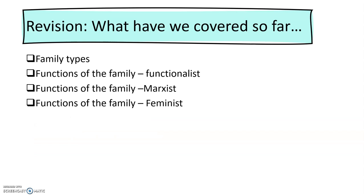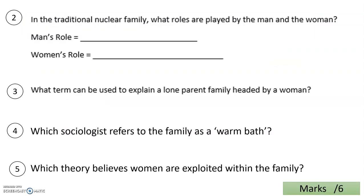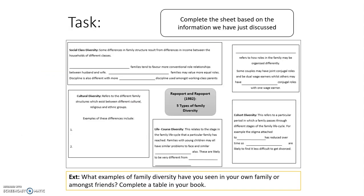So, where are we up to so far? We've looked at family types, the functions of the family according to functionalism, Marxism and feminism, and we've now done family diversity. There are some practice questions here — feel free to have a go. There is also a sheet attached in the shared area for revision if you'd like. I hope you've taken a lot from this — see you next lesson. Bye.